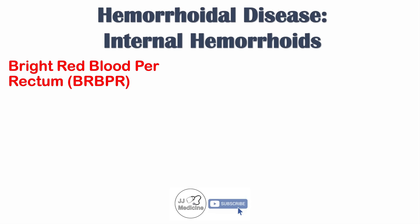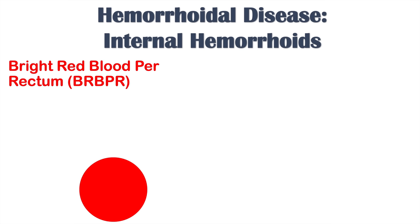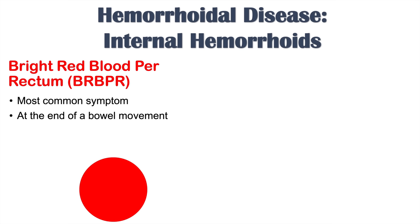Now let's talk about signs and symptoms of internal hemorrhoids. The first and most important sign is bright red blood per rectum. This is the most common symptom and we see it at the end of a bowel movement — bright red blood visible in the toilet and on toilet paper.